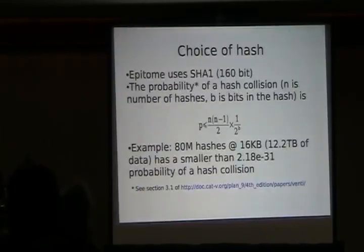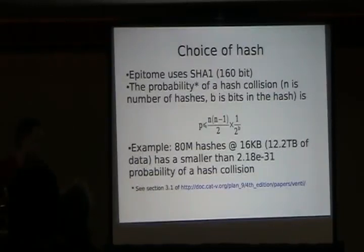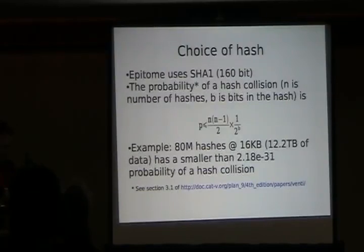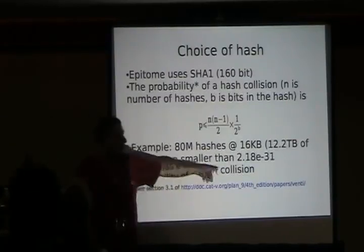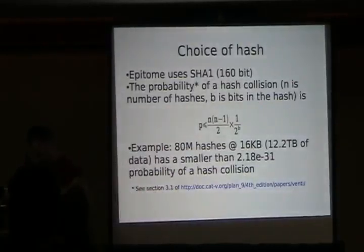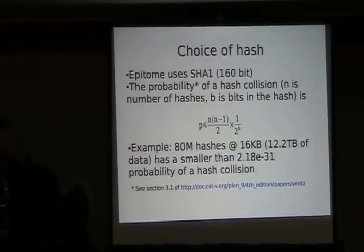This is something I lifted from the research the Venti folks did at Plan 9. They also use SHA-1, 160-bit. With 80 million hashes at 16 kilobytes — which yields about 12.2 terabytes worth of data — there's a 2.18 times 10 to the minus 31st chance of hash collision. That's pretty minimal. In other words, I'm not too worried about it.